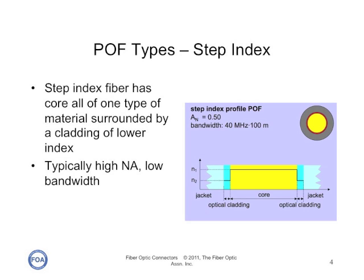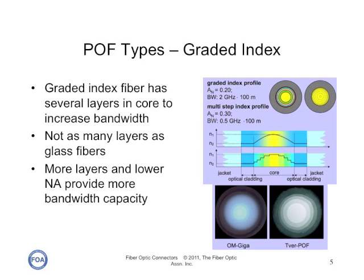Like glass multimode fiber, POF comes in two types: step index and graded index. The step index fiber has a core of one type of material surrounded by a cladding of lower index material that traps the light inside the core with total internal reflection. Typically these fibers are high numerical aperture and low bandwidth fibers. Graded index POF, just like graded index multimode glass fiber, has several layers in the core to increase its bandwidth. It typically doesn't have as many layers as glass fiber, so the compensation isn't quite as good. But more layers and a lower numerical aperture can be used to provide more bandwidth capacity for high bit rate applications.